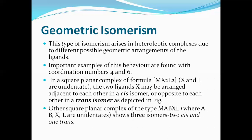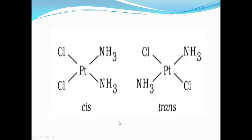Another type of square planar complex is MABXL, where A, B, X, and L are all different unidentate ligands. In this case, there are three types of isomers: two cis forms and one trans.